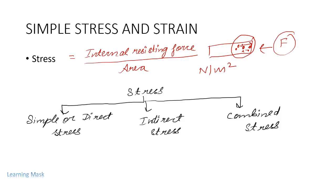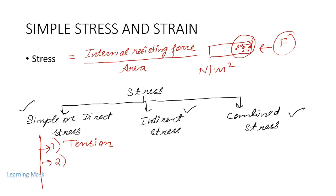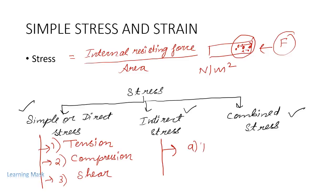We classify stress as simple or direct stress, indirect stress, or combined stress. Under simple/direct stress we have three types: tension (tensile force), compression (compressive force), and shear. Under indirect stress we have two categories: bending and torsion.